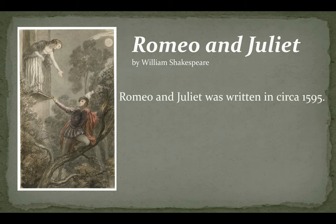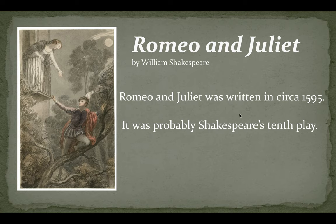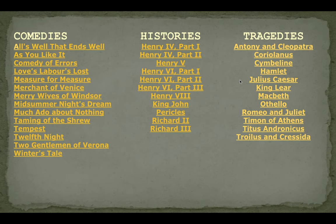Romeo and Juliet was written circa 1595. You may remember that 'circa' means about or approximately, so we know it was written in about 1595. We don't know for certain, but we can base this on things such as playbills for the play itself and other documentation. It was probably Shakespeare's tenth play — and of course we say probably because we are piecing together information from a long time ago. Here you see a classic scene from the play in which Romeo climbs up to Juliet's room and they meet under the cover of darkness. Romeo and Juliet was probably Shakespeare's tenth play.